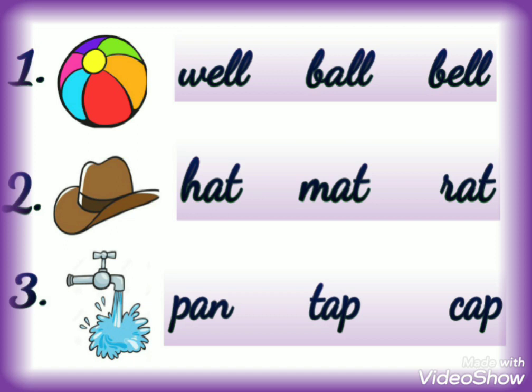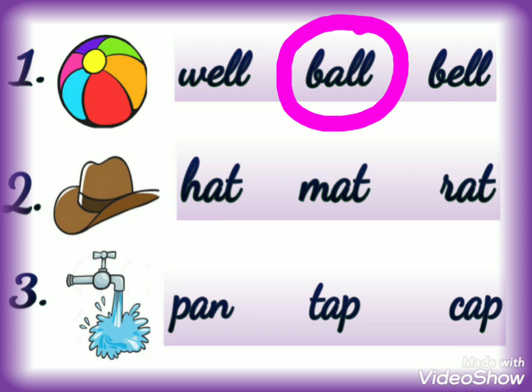Number one — this is the picture of ball. We will read all three options one by one. First option is W-E-L-L, well — this is not the right answer. Second option is B-E-L-L, ball — yes, this is the right answer, so we will circle this word. The third option is B-E-L-L — this is also not the correct answer. So we will move on to the next number.